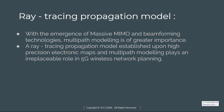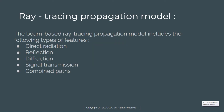The beam-based ray tracing propagation model includes various features: direct radiation, reflection, diffraction, signal transmission, and combined path.